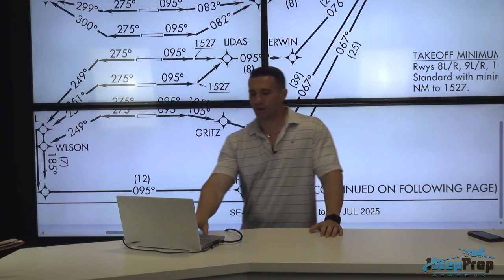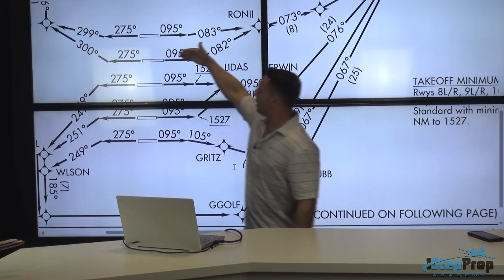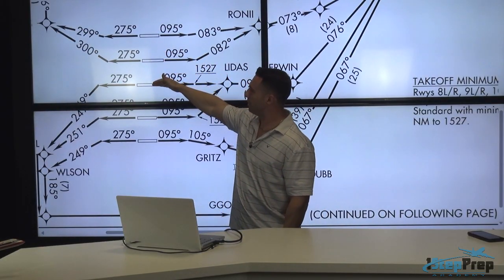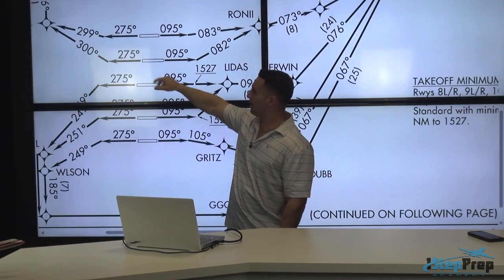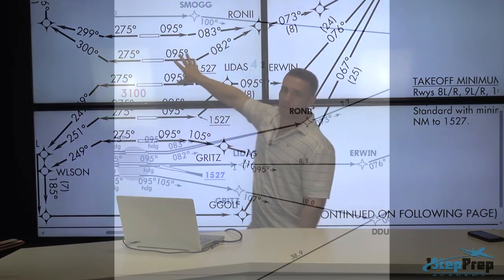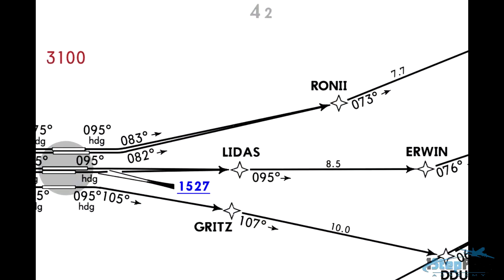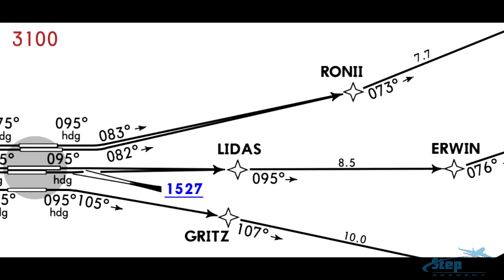And now what could be catastrophic is that if you have an aircraft departing 8 right and one departing over here on 9 left and one of them happens to load the incorrect waypoint, let's say rather than go RNAV to Roni, they loaded the more southerly runway and they do RNAV to LIDAS here and this parallel departure is also navigating to LIDAS at the same time. This is where you could potentially find yourself on a converging path leading to a TCAS RA.